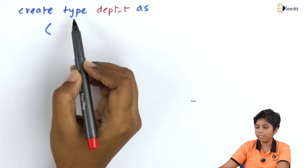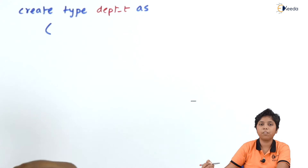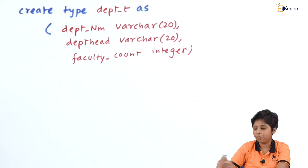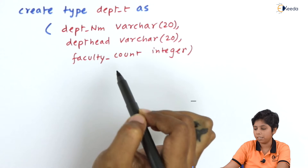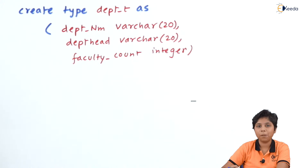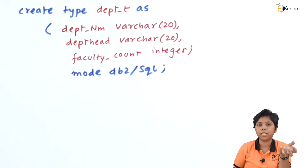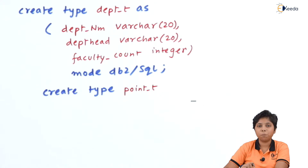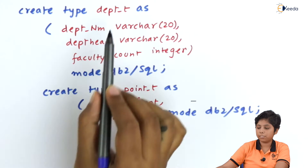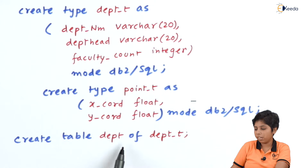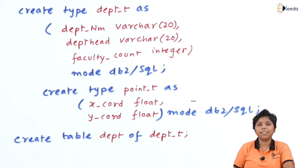For creating complex data types in IBM DB2, we can use either primitive types or complex data types. We create the type department_t as a complex type, having three primitive attributes: department name and department ID as varchar, and faculty count as an integer. Setting it to DB2 mode with the DB2 SQL mode keyword allows it to be implemented as a structured type, supported by primitive programming languages. We can also create a point type with x and y variables, and tables can be created from either department_t or point_t.